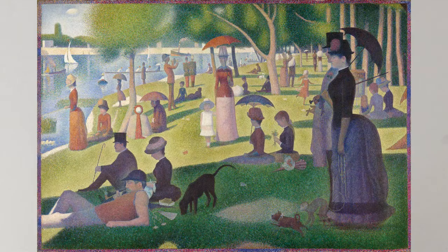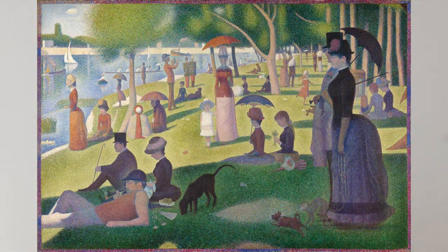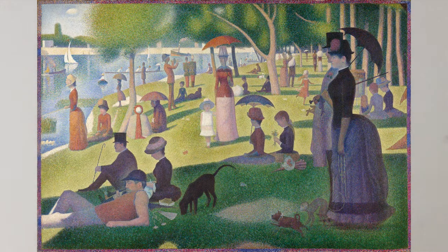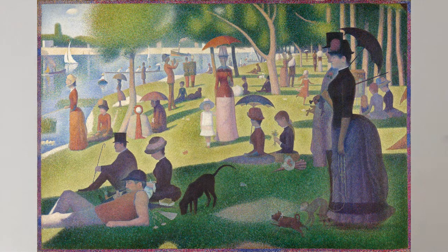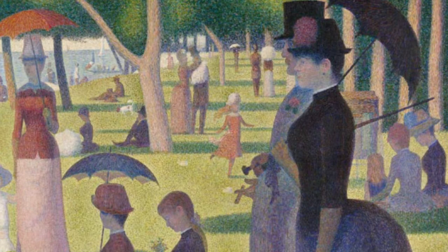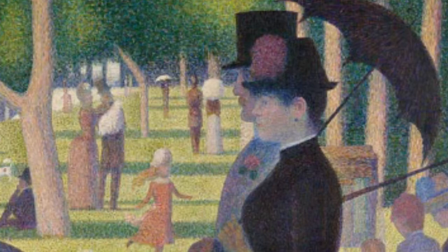Now what is pointillism? Back in the 1800s an artist named George Seurat came up with an art form called pointillism. If you look at a picture created with pointillism from far away it seems like pretty much any normal picture. But step in a little closer and you'll notice that those beautiful colors are just a bunch of dots.